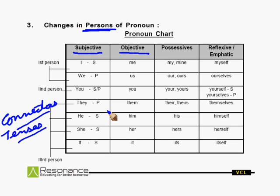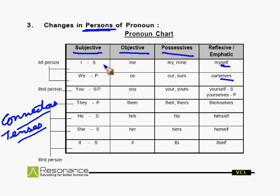As far as 'I' is concerned, it takes possessives as 'my' and 'mine'. Suppose I say, 'This is my book', 'this is my house', or 'this book is mine', 'this house is mine'. The possessive shows possession — the things that belong to you, your belongings. For reflexive and emphatic case, we add 'self' in singulars and 'selves' in plurals.